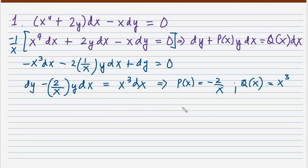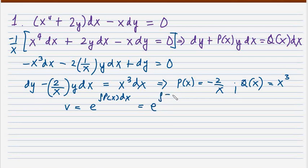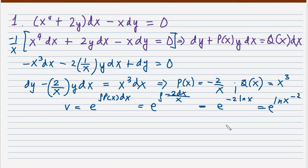As discussed previously, if the equation fits the standard form, then the integrating factor is e raised to the integral of P(x) dx. Applying that: e raised to the integral of negative 2 over x dx. That evaluates to e raised to negative 2 ln x, or e raised to ln(x^(-2)), so the integrating factor is simply x raised to negative 2.